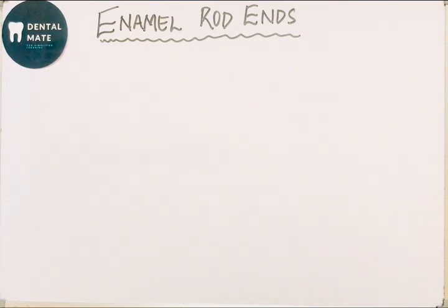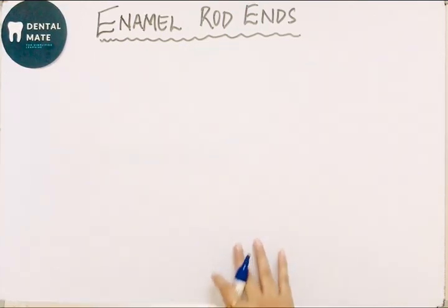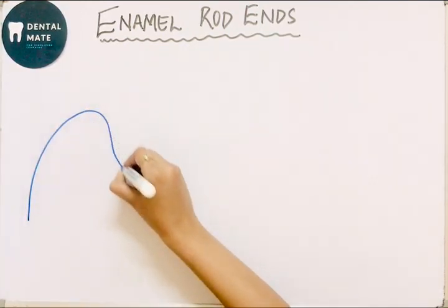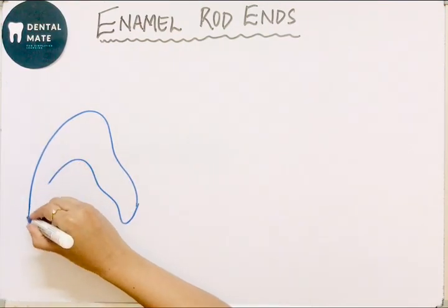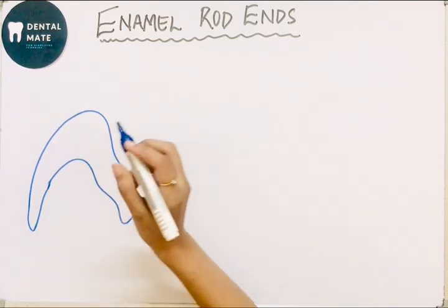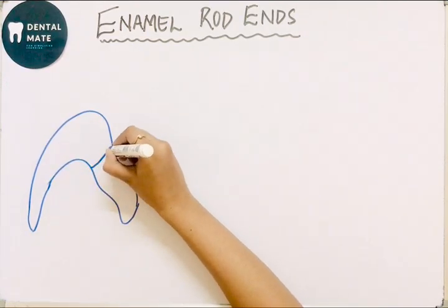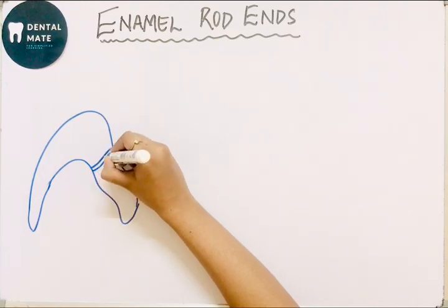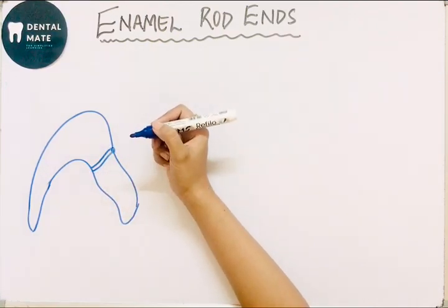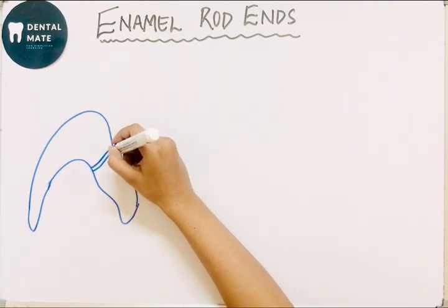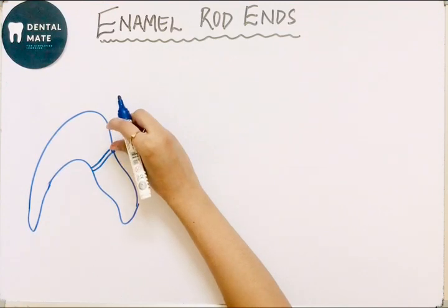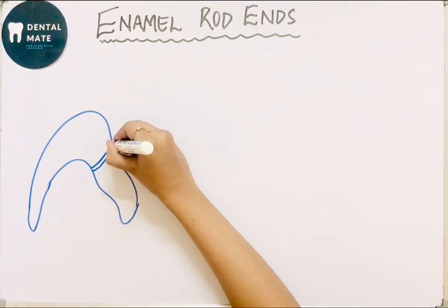So what are the enamel rod ends? These are the ends of the enamel rod which appear on the outer surface. If this is the enamel and dentine of the tooth, this end is the end of the enamel rod on the outer surface of the tooth. This end appears as a concavity on the outer surface.